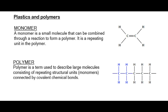Looking at polymerization, we see that we have monomers. For example, here we have ethene. The ethene molecule breaks up to form many hundreds of repeating units which combine to form very long macromolecules, or very large molecules, which are called polymers. We will look at some examples as we go along.